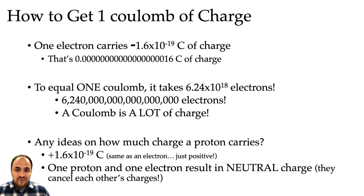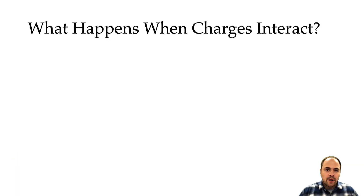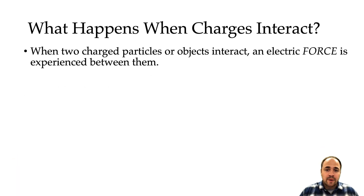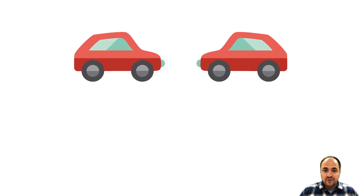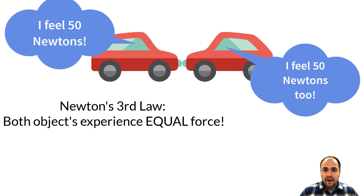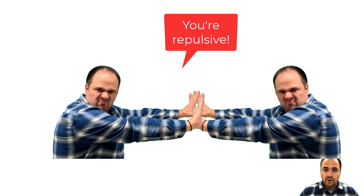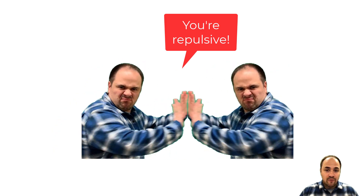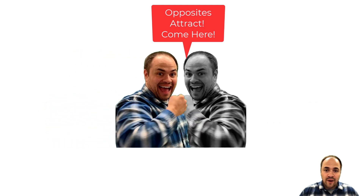When objects interact they actually experience a force from each other — one object exerts a force on the other, and the other exerts a force back. That's Newton's Third Law. That force — a push or a pull — depends on the type of charge: like charges will repel, they'll push away from each other, and opposite charges will attract, they will pull towards each other.